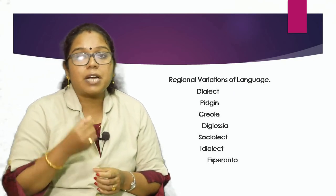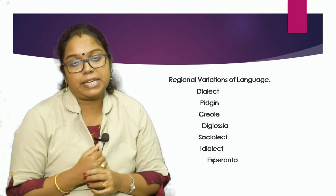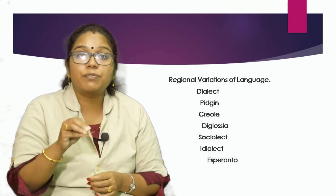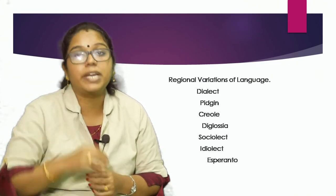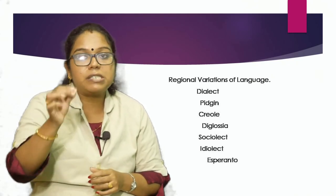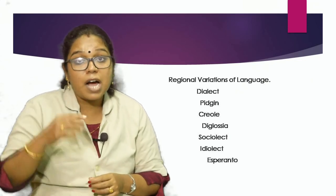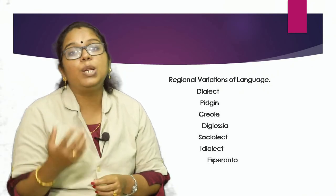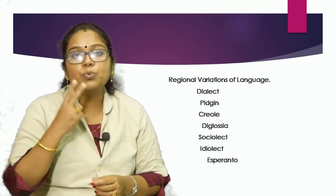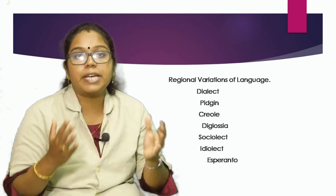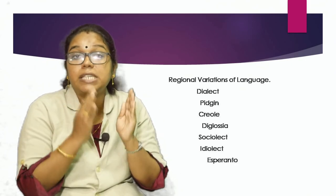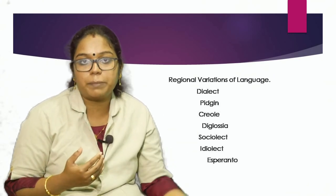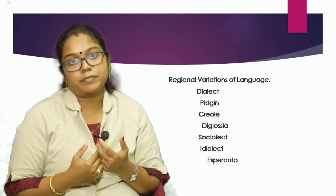Next is diglossia. Sometimes a speech community uses two dialects, but there is a strong tendency to use one of these for special, prestigious, or formal occasions. This prestigious dialect is called High, and the informal, commonly spoken dialect is called Low. These two are not allowed to intermingle. Such use of two dialects by a speech community is called diglossia. Examples include High and Low Tamil, High and Low Arabic, etc.